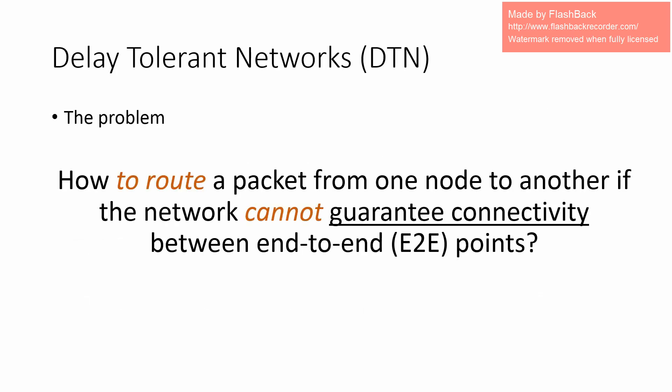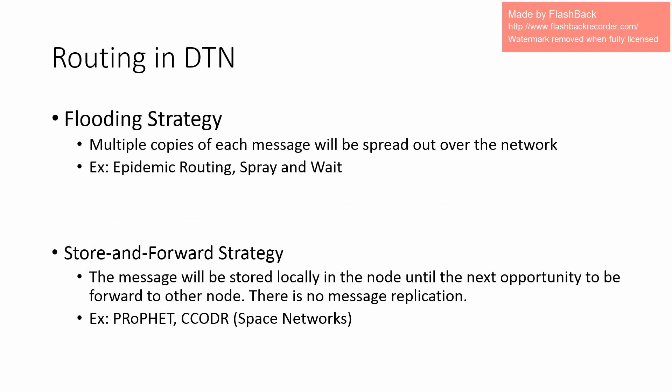The problem in DTN is how to route a packet from one node to another if the network cannot guarantee connectivity between end-to-end points. We have two strategies to address that: the flooding strategy, which consists of spreading multiple copies of messages over the network, and the store-and-forward strategy, which stores the message locally until the next opportunity to transfer the information.